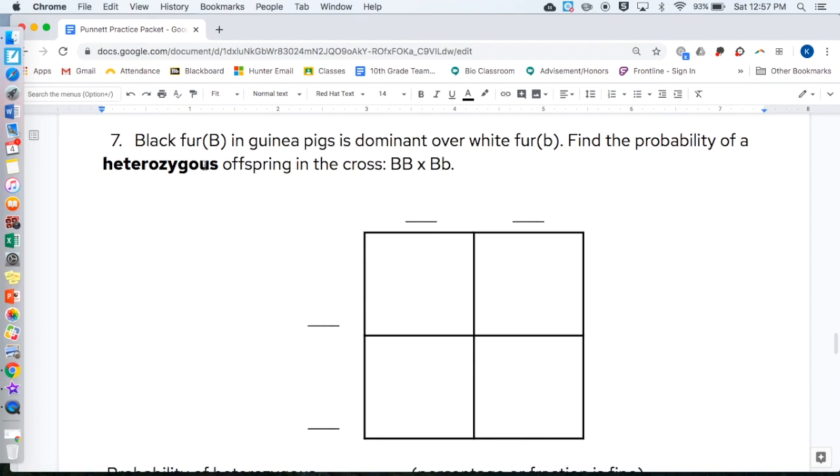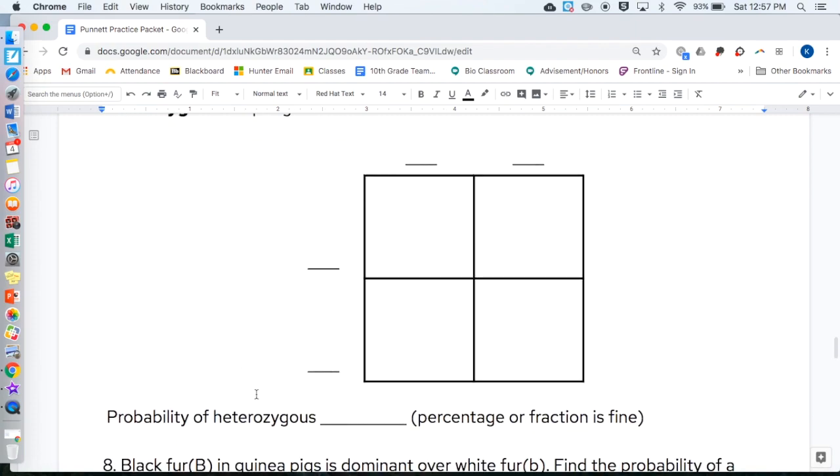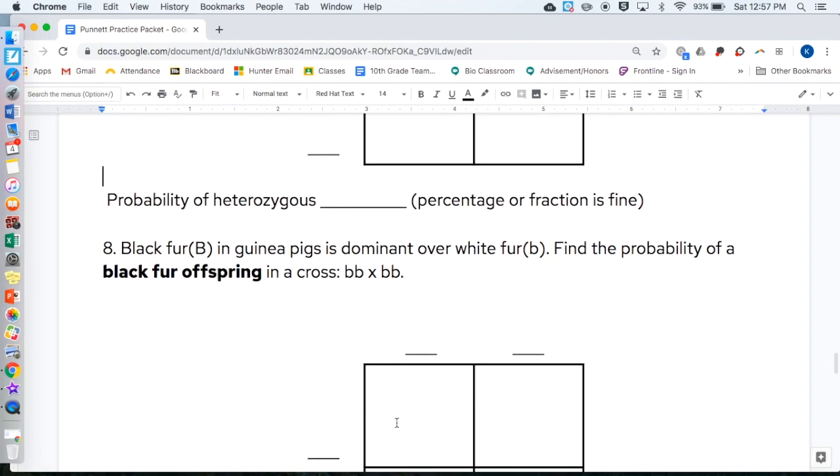Black fur, capital B in guinea pigs, is dominant over white fur, lowercase b. Find the probability of a heterozygous offspring in the cross, capital B, capital B, times capital B, lowercase b. Find the probability of the heterozygous, write it on the line. The percentage or fraction is fine for all of these.